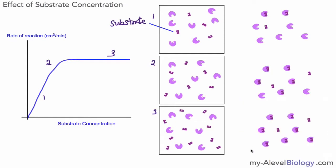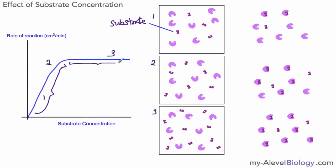At point three, we have a high concentration of substrate, and at any given moment all of the enzyme active sites are occupied. Substrate molecules cannot combine as quickly as they would like to, so no matter how much you increase the substrate concentration, the reaction cannot go any faster. Over this region of the graph, the substrate is no longer limiting the rate — all active sites are filled and the reaction is at maximum rate.